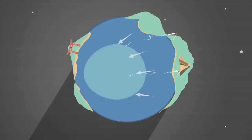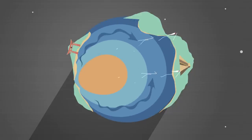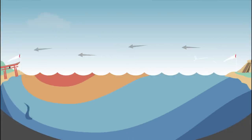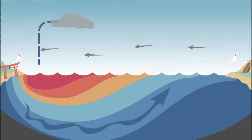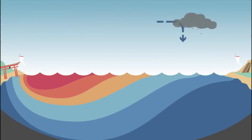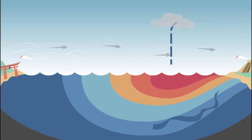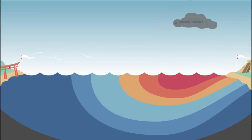Trade winds normally blow from east to west across this region, sweeping warm surface water away from South America, which allows cold water to well up in its place. But during El Niño, these trade winds weaken or even reverse, leaving the warmer surface water to gather along the South American coast.